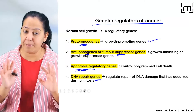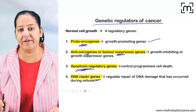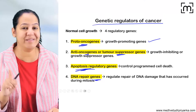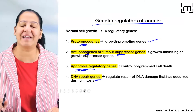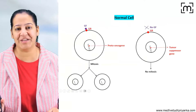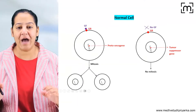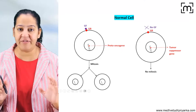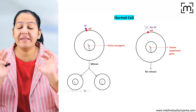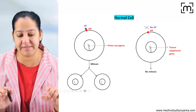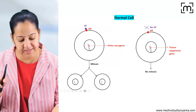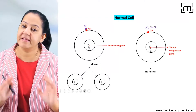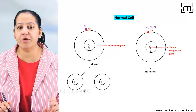Let me explain the meaning of all four genetic regulators, and then we will start with the first one: proto-oncogenes. Please see this diagram — shown here are normal cells.